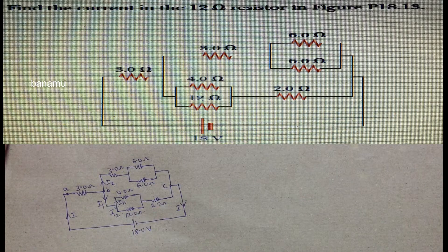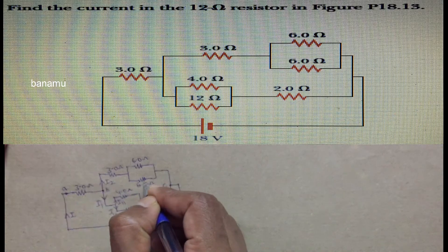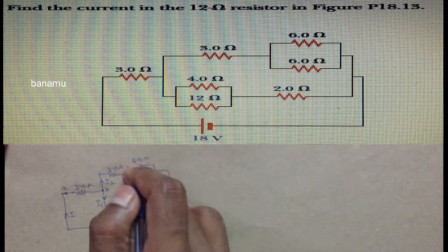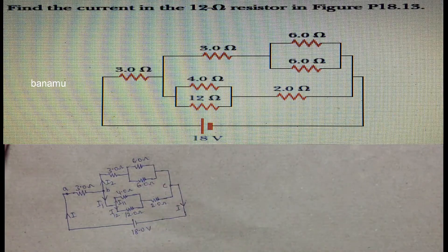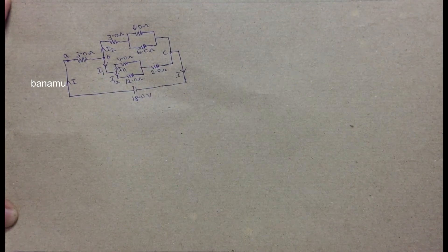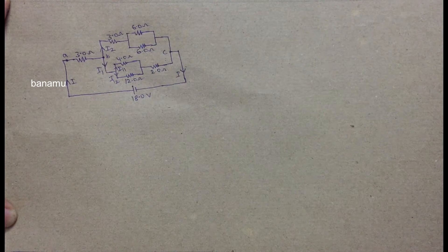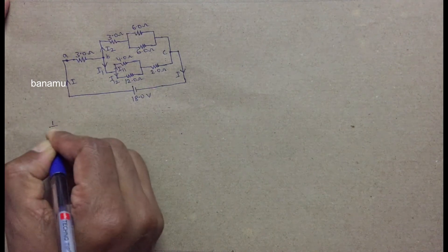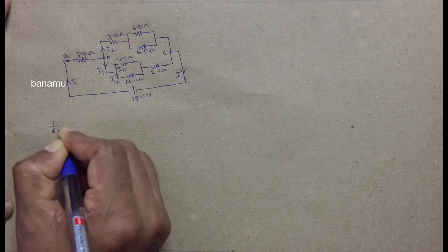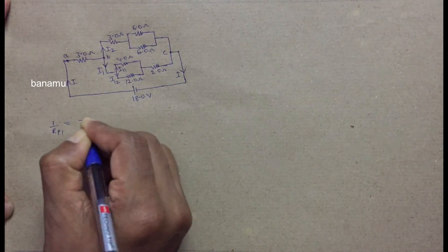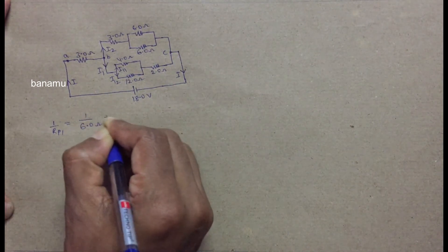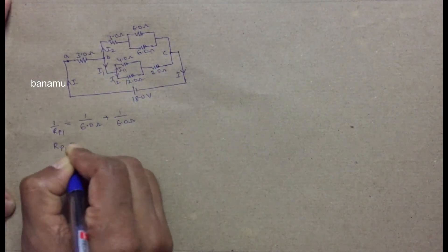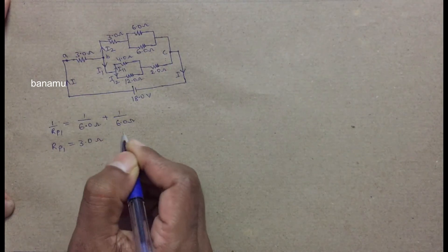First, calculate the equivalent resistance for the 6 ohm and 6 ohm resistances connected in parallel. Let this be Rp1. The reciprocal of the equivalent resistance equals the sum of the reciprocals of individual resistances. So 1/Rp1 = 1/6 + 1/6. Therefore, Rp1 equals 3 ohms.